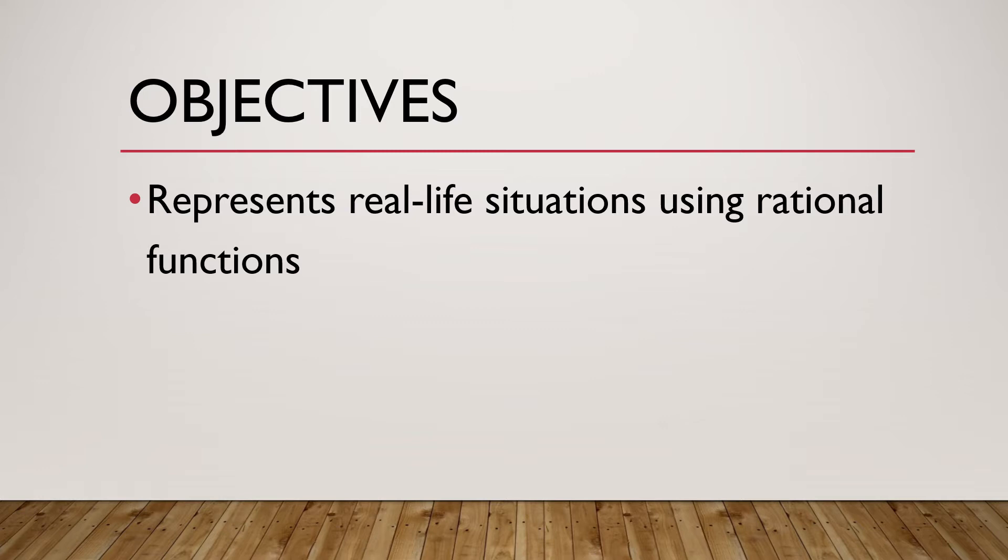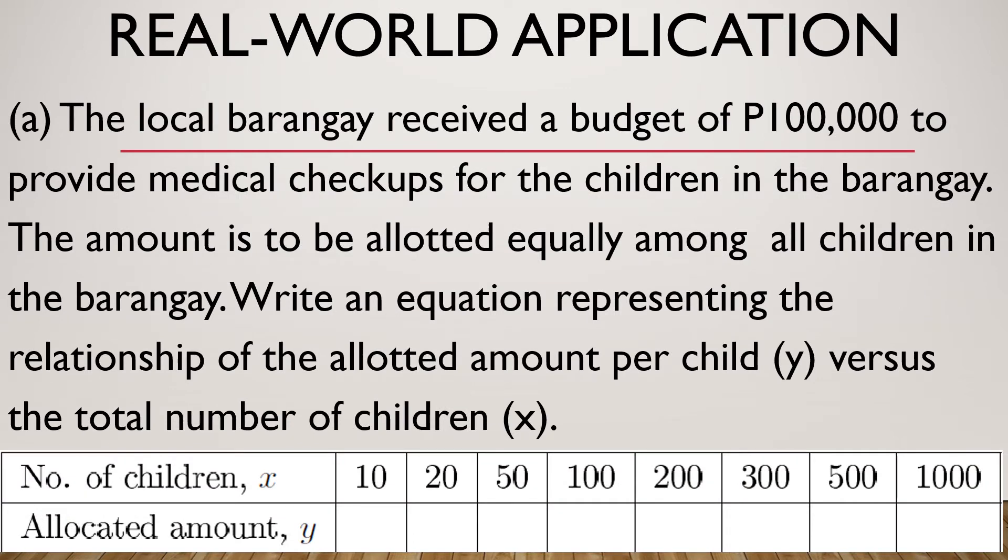Now let me present the objective for this lesson and that is to represent real life situation using rational functions. So the local barangay received a budget of 100,000 to provide medical check-ups for the children in the barangay. The amount is to be allotted equally among all children in the barangay. We have to write an equation representing the relationship of the allotted amount per child y versus the total number of children.